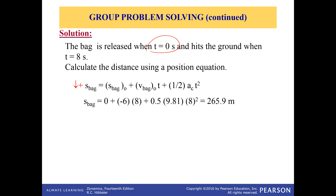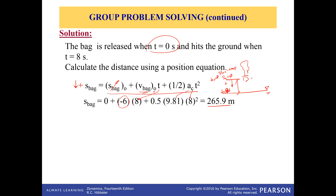What is important again is what you decided as your values. When we had the balloon and the bag falling, we said S₀ equals zero, downward is positive, and this is the ground. The initial velocity was negative 6 meters per second, and the time is 8 seconds. Using equation two and substituting — distance zero, initial velocity negative 6, time 8 seconds — with the acceleration term, this distance is 265.9 meters.